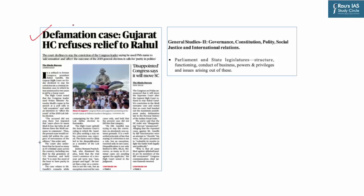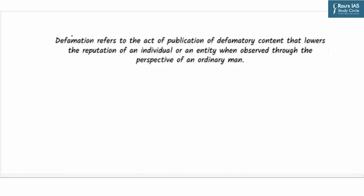Our next discussion is based on an article from page number one. The Gujarat High Court on Friday dismissed Rahul Gandhi's plea seeking a stay on his conviction in a criminal defamation case over his Modi surname remark. With this order, Rahul Gandhi will continue to remain suspended as a Member of Parliament and will not be able to contest elections; he can appeal to a larger bench of the Gujarat High Court or the Supreme Court. This case raises two pertinent issues: disqualification of elected members of the house, and criminal defamation and its utility in democratic India — both important themes under GS Paper 2.